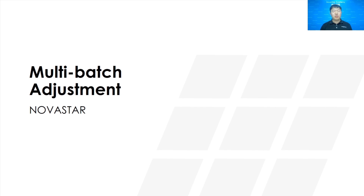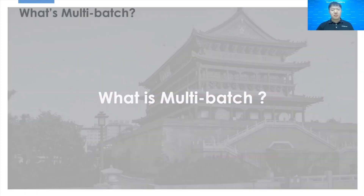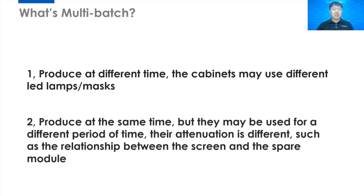Hey guys, I'm Darren from Novastar Training Group. Today we're going to talk about multi-batch adjustment. First, what is a multi-batch? There are two situations: first, cabinets produced at different times may use different LED lamps and even different colored masks. Second, cabinets produced at the same time but used for different periods have different aging, such as the relationship between the main screen and a spare module.